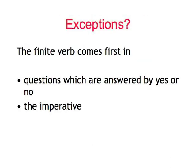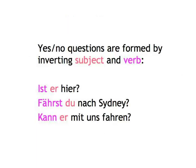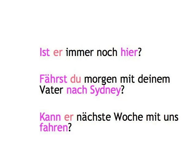Are there exceptions to this rule? Not in normal sentences, but in some questions and in the imperative the finite verb comes first. You've already come across questions which are answered by yes or no — this sort of question is simply formed by inverting subject and verb, much like the English form 'Is he here?' In German: 'Fährst du nach Sydney?' 'Kann er mit uns fahren?' In yes-or-no questions you have to start with a finite verb, but you can still observe the drumroll principle: 'Ist er immer noch hier?' 'Fährst du morgen mit deinem Vater nach Sydney?' 'Kann er nächste Woche mit uns fahren?'